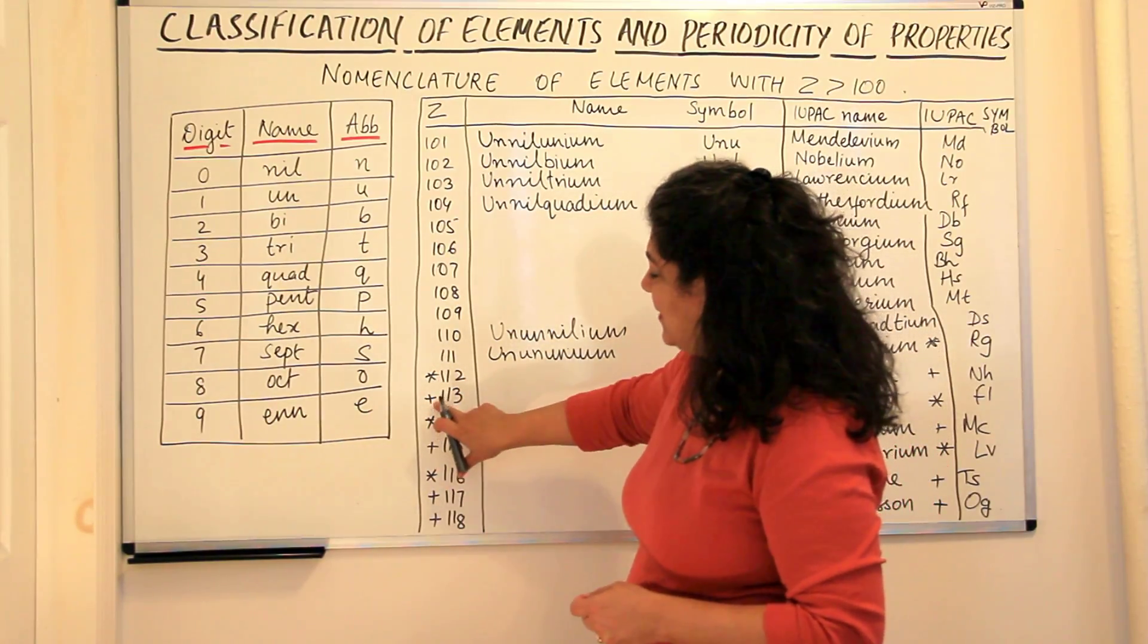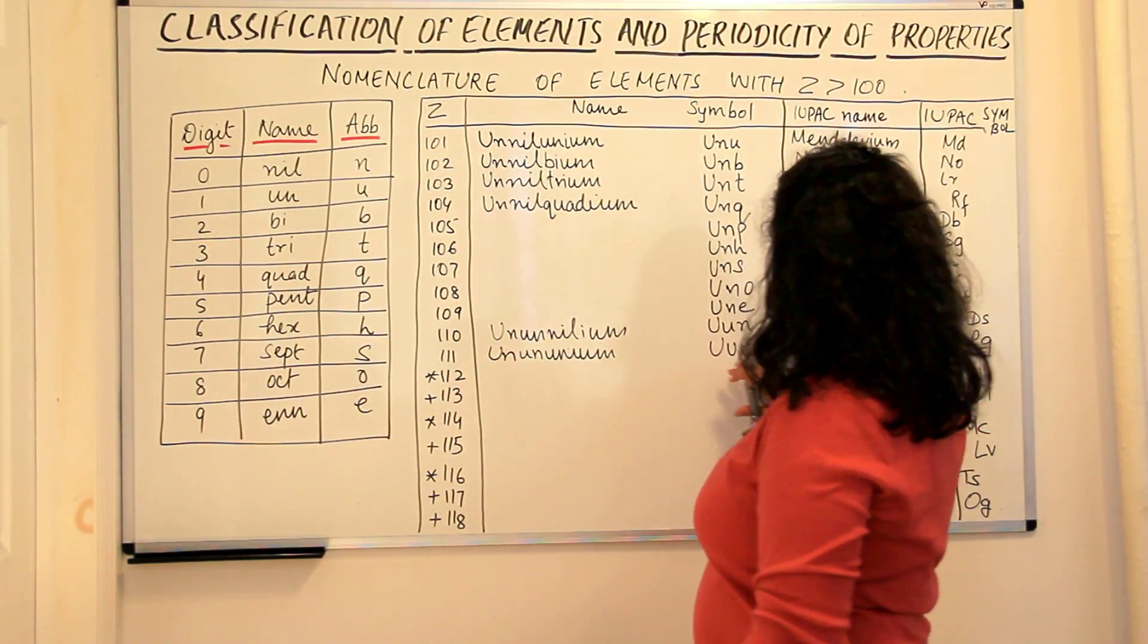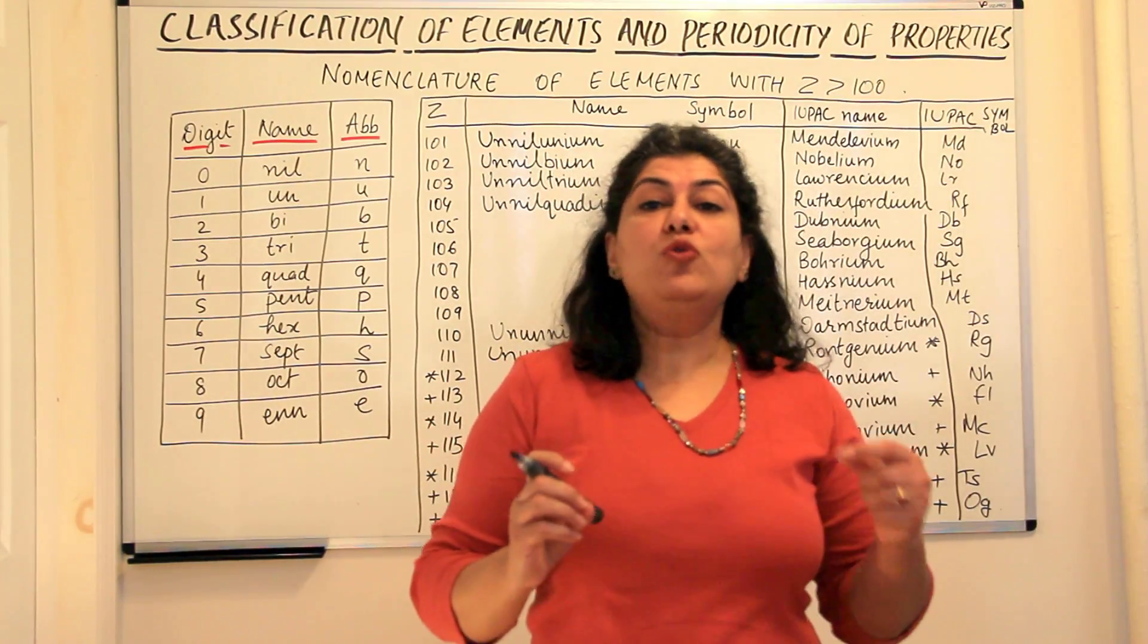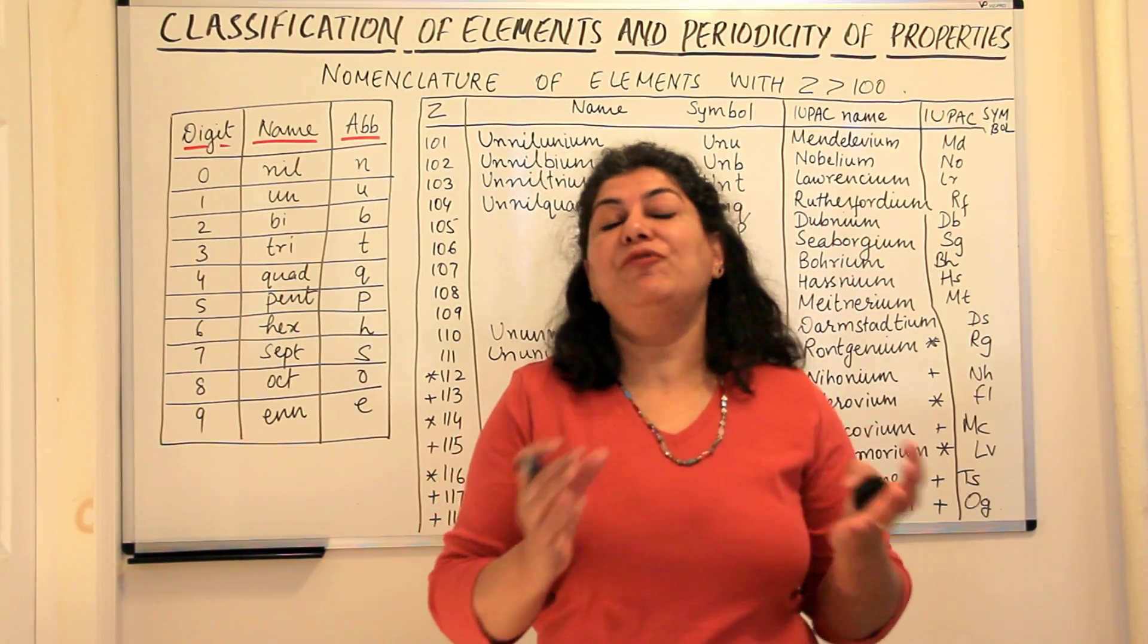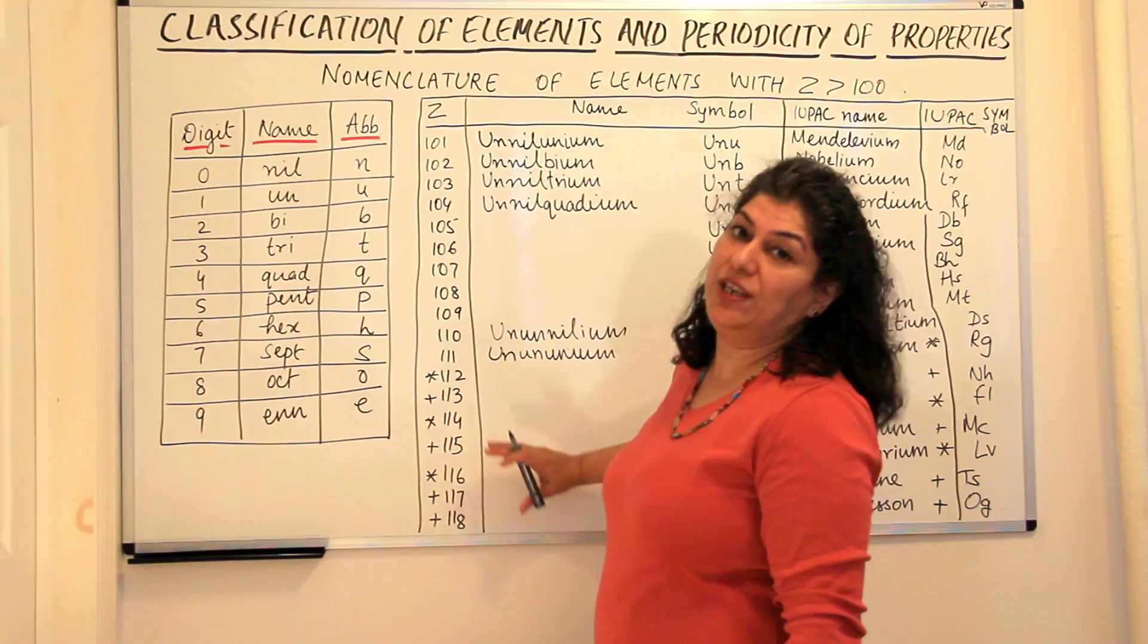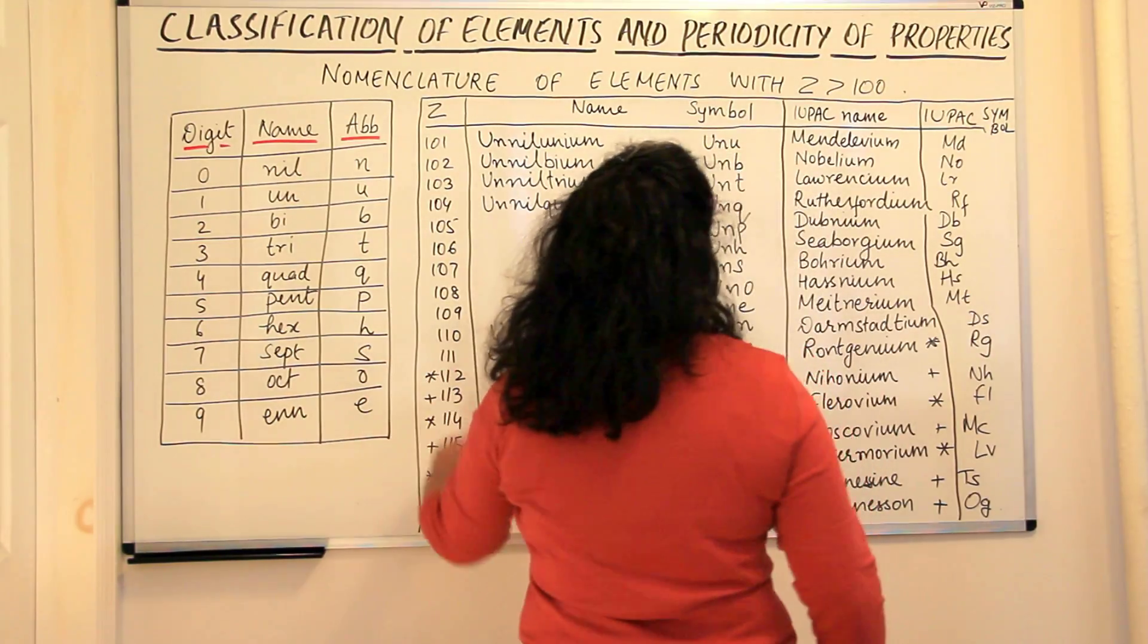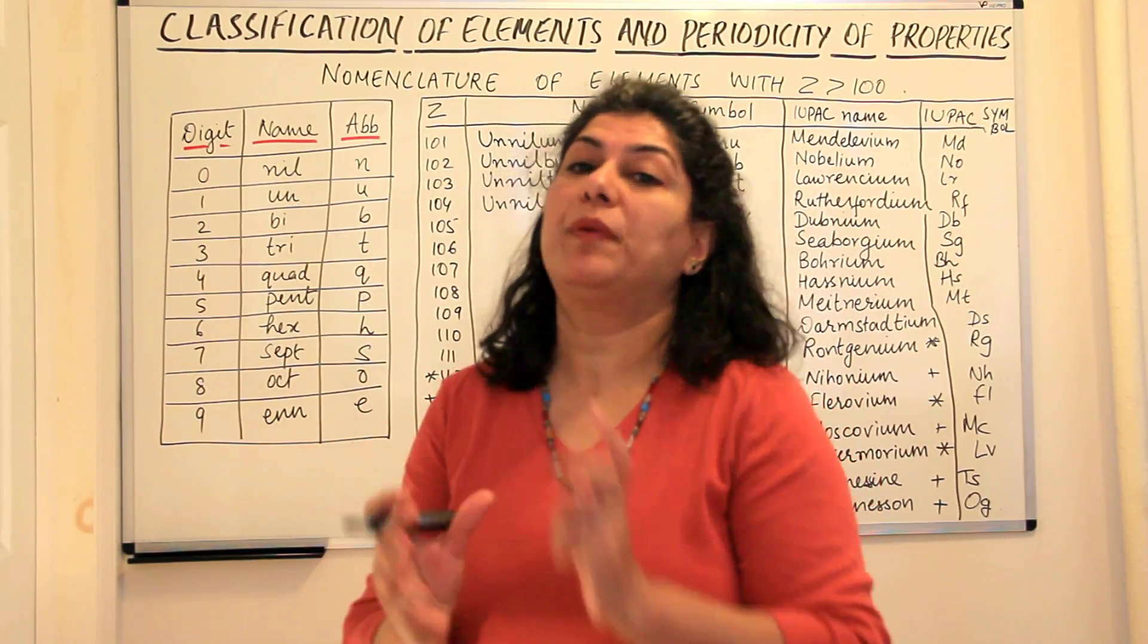Now, do you see these asterisks and the pluses here? The elements up to 111 are definitely known and they have their names too. But when you come to 112, elements which have asterisks are the ones whose names are still under controversy. They have been discovered but the scientists have not still arrived at a common agreement on their names and therefore they would prefer to use this nomenclature for these elements. And the elements which are shown by the plus sign, that is 113th element, 115th, 117th and 118th, they would be the ones that have not yet been discovered but we expect them to be discovered or to be prepared by scientists.